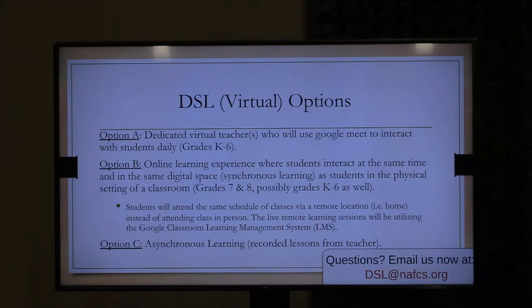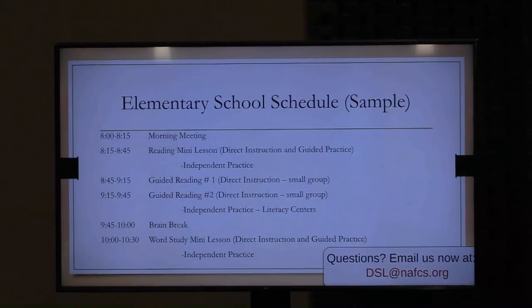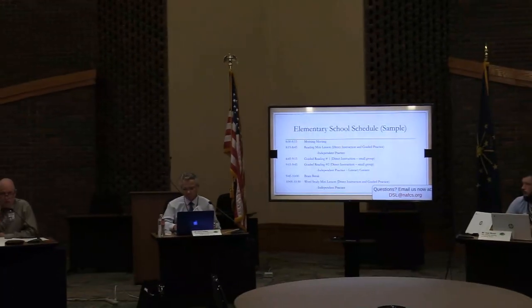Option C is an asynchronous option — recorded lessons from the teacher — really a tool for families where a student may be at a daycare without digital access, or where both parents are working from home and find it very difficult to help their student. We would encourage all students to be in options A or B if at all possible, and use option C as a tool for situations where you can't help your student, especially younger students in kindergarten and first grade who may need help navigating Google Classroom at the beginning.